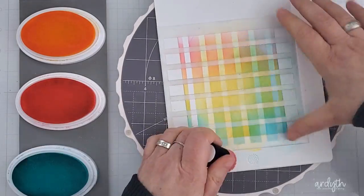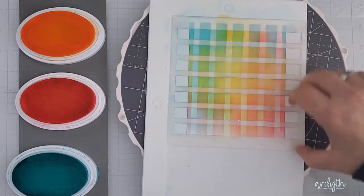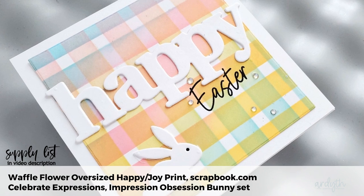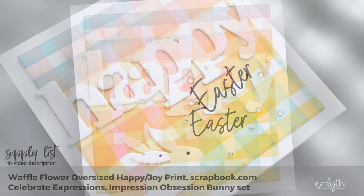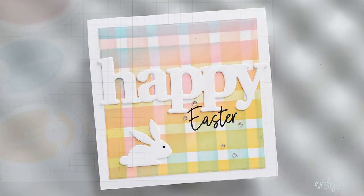You could also tape over some of the stripes to create that more uneven look. This is really just a faster and easier way than trying to create the plaid just with the tape. These pastel colors were calling out for an Easter card, and I used a Waffle Flower happy die, a Scrapbook.com Easter stamp, and an Impression Obsession bunny.